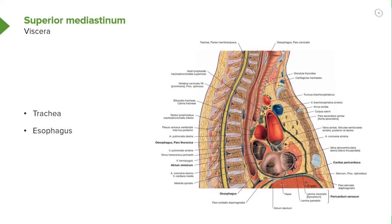We want to take a brief look at each of the mediastinal areas. The purpose is to understand the major or key viscera that are occupants of these mediastinal divisions and subdivisions. The superior mediastinum contains the trachea, and running posterior to it in the superior mediastinum will be the esophagus.